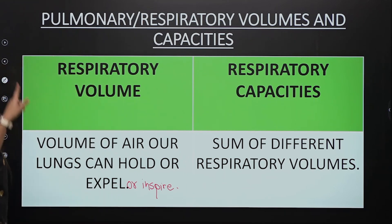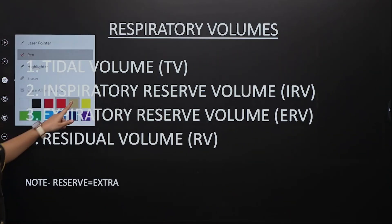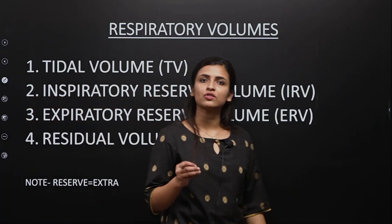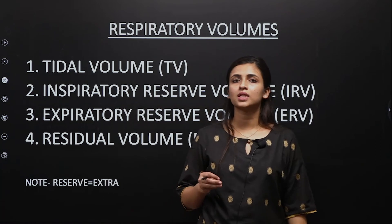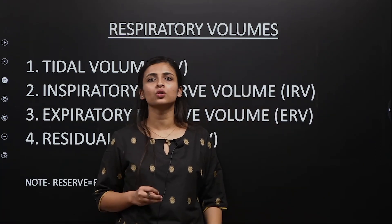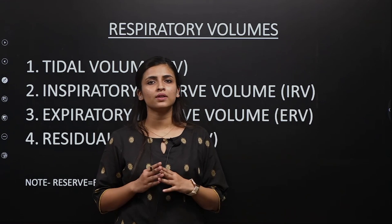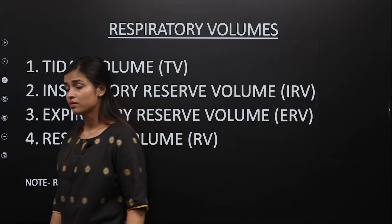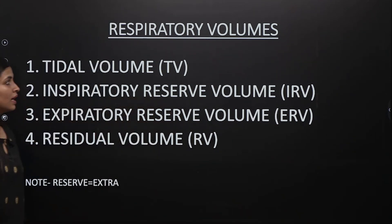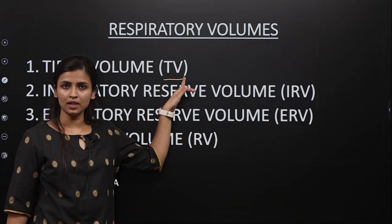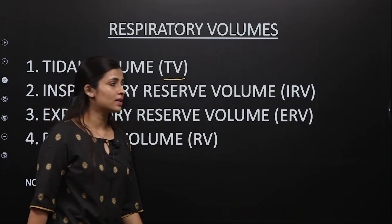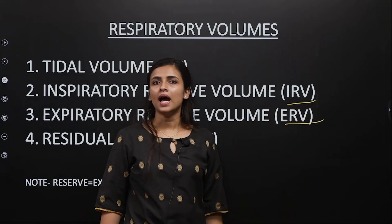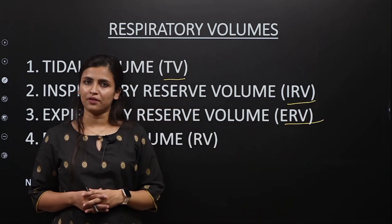Let us read all the respiratory volumes step by step. There are four respiratory volumes mentioned in the NCERT. The first one is the tidal volume (TV), the second is the inspiratory reserve volume (IRV), the third is the expiratory reserve volume (ERV), and the last one is the residual volume (RV).